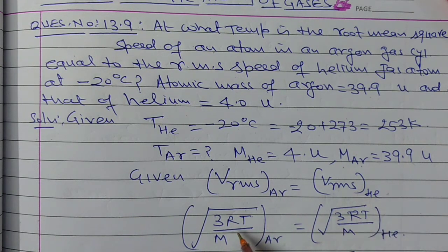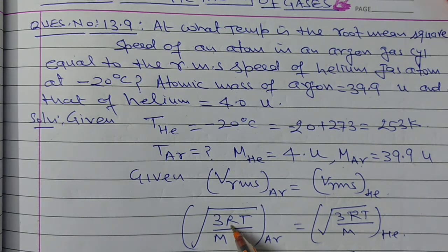The RMS speed formula is square root of 3RT upon M. We derived this in the theory part, here we'll use it directly. R is the universal gas constant and M is the molecular mass.